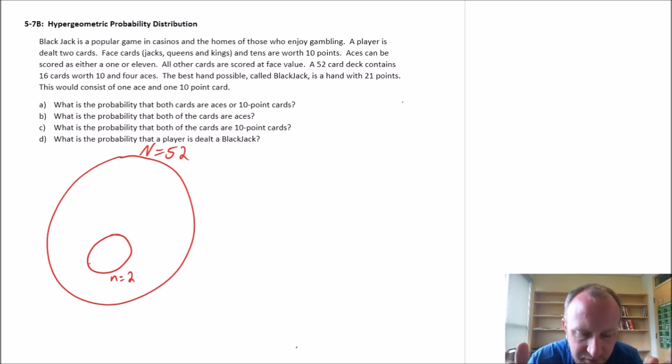We have face cards, jack queens and kings and tens are all worth 10 points. Aces are one or 11. All other cards are scored at face value. So one through nine are face value. The 52 card deck contains 16 cards worth 10 and four aces. The best hand possible called the blackjack is 21 points, which would be one ace and one 10 point card.